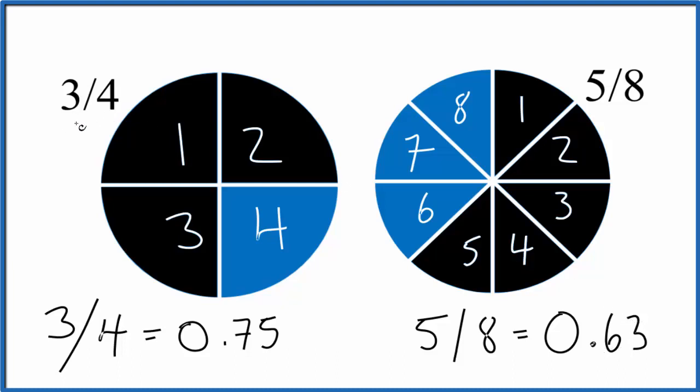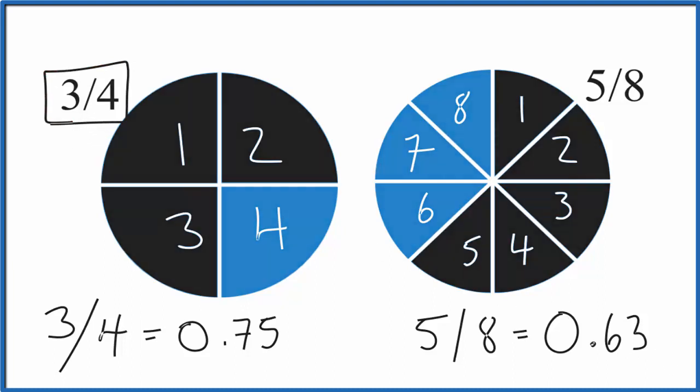So in answer to our question, 3 fourths is a bigger number than 5 eighths. This is Dr. B, and thanks for watching.